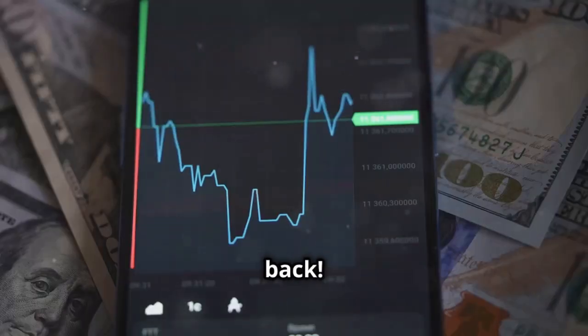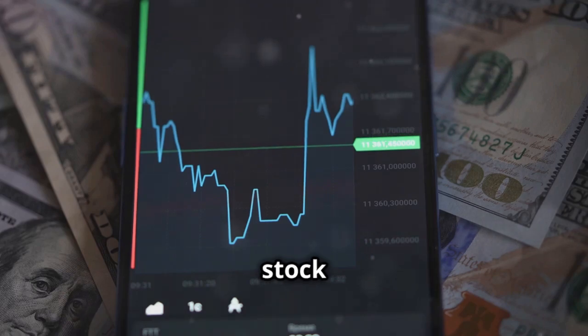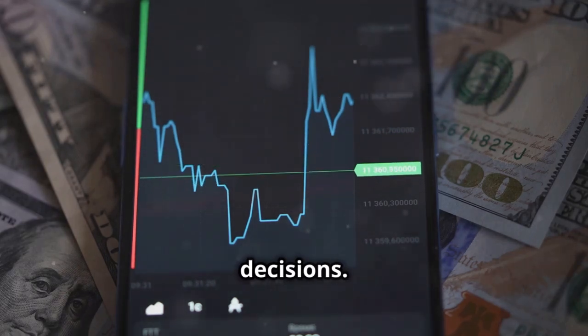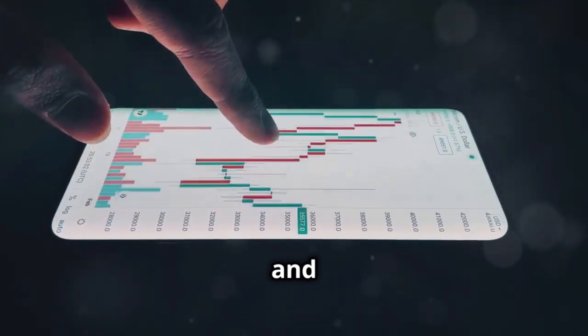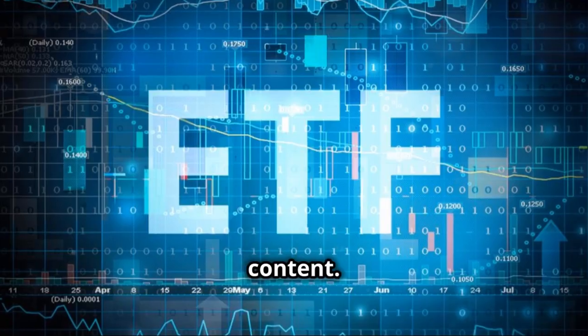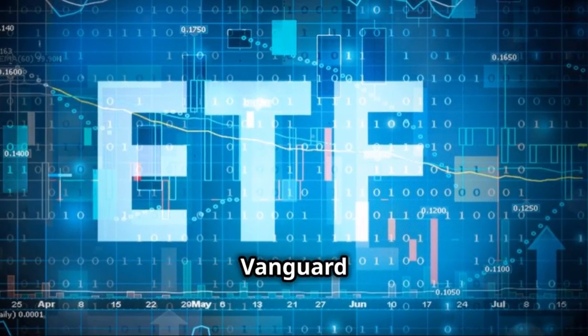Hey Bull Market Bullies, welcome back. We break down the latest in the stock market to help you make informed decisions. Like, comment, and subscribe to stay updated with our latest content. Today we're diving into the Vanguard S&P 500 ETF, ticker symbol VOO.